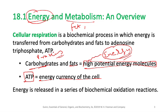The body uses ATP to perform work such as contracting muscles, synthesizing large molecules, or moving substances across the cell membrane. ATP is formed from the energy released by breaking down biomolecules in food. Cellular respiration is the biochemical process in which energy is transferred from carbohydrates and fat to ATP.